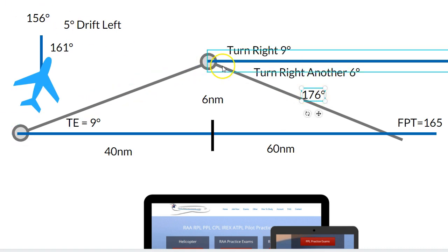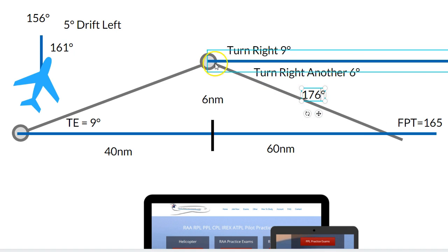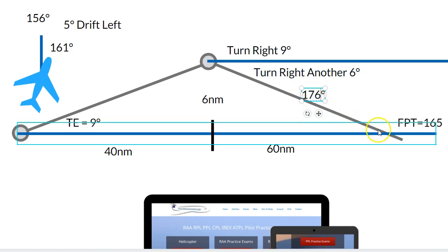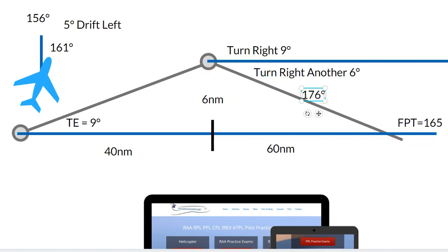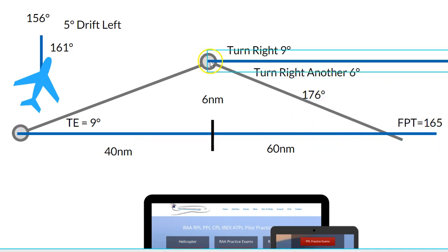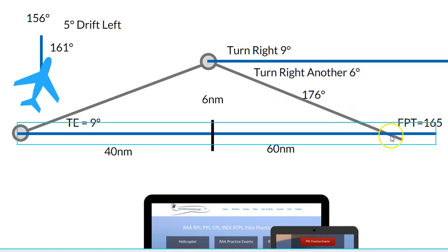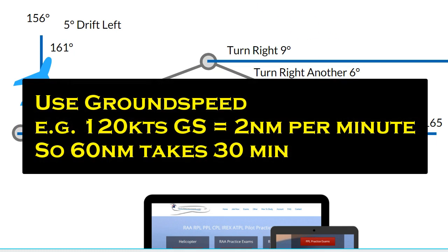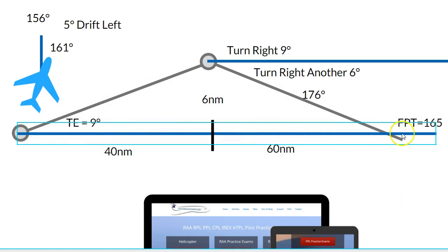Now that we have our new heading of 176, flying that will eventually bring us straight across our flight plan track. We need to know when to turn left to get back onto it — that's a calculation using airspeed and time over 60 nautical miles. For example, at 60 knots that takes one hour; at 120 knots it takes half an hour. For anything in between, you'd use your flight computer to calculate the exact time to turn left.